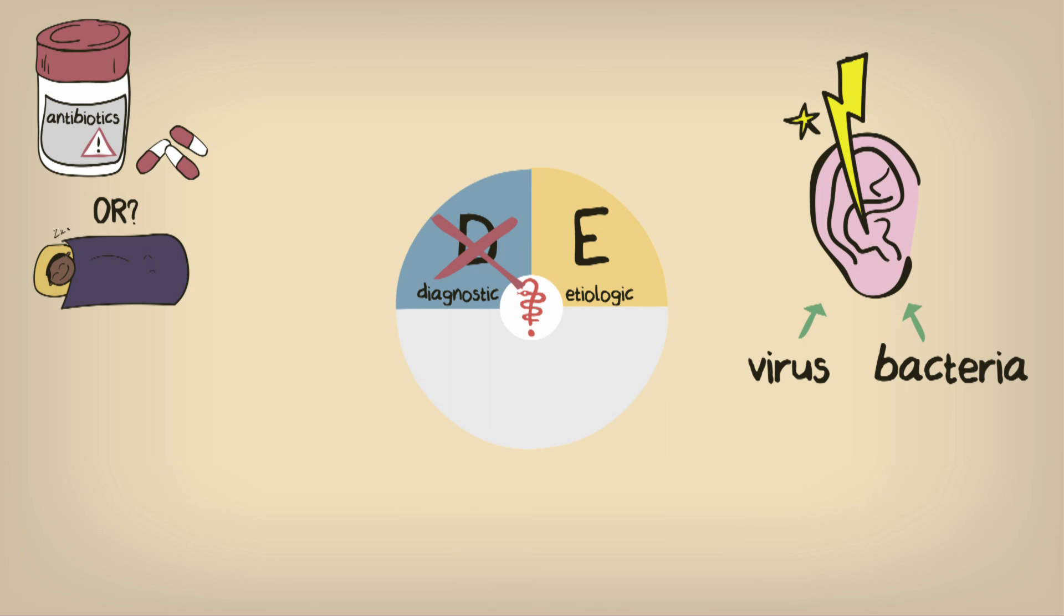While etiology isn't usually directly important in clinical decision making, in this case, it certainly has implications regarding a patient's prognosis and therapy. Because bacterial infections may have a poorer prognosis, and antibiotics, the therapy, won't work when the otitis is caused by a virus. And that brings us to the next aspect of our clinical problem.